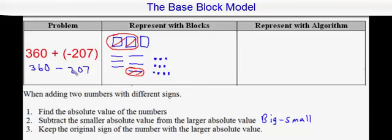So now, recap: I took away 2 of the flats, I am to take away 0 of the rods, but now I am to take away 7 units and now I can since I made this exchange. So taking away 7 of the units — that would be 1, 2, 3, 4, 5, 6, 7 that I'm taking away.